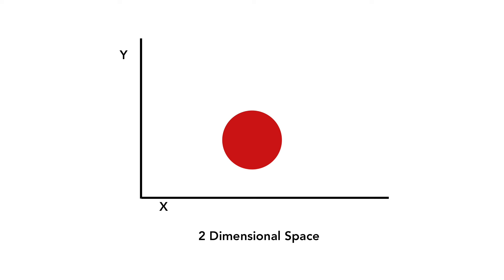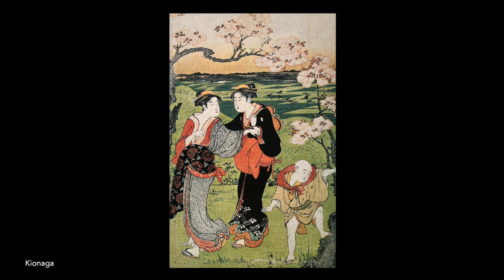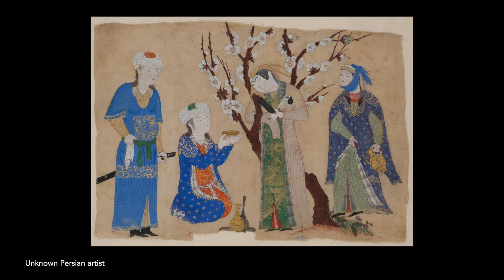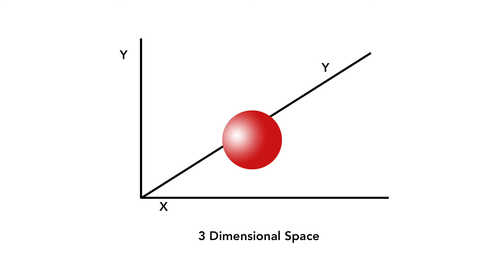So far, we've been dealing with two-dimensional space, and there are wonderful artistic traditions that never leave that arena. But because the real world is three-dimensional, we can make our work appear more believable by building an illusion of volume and space.